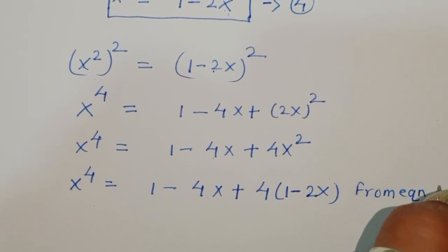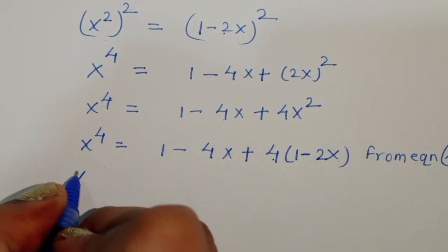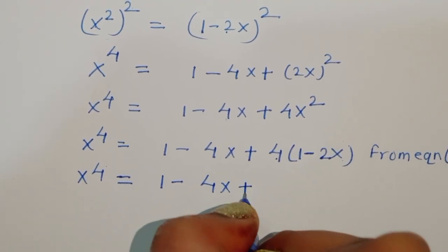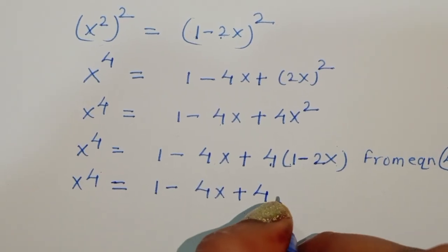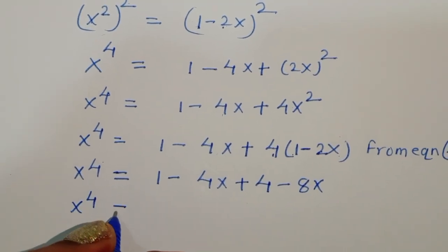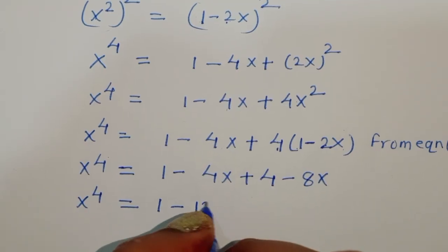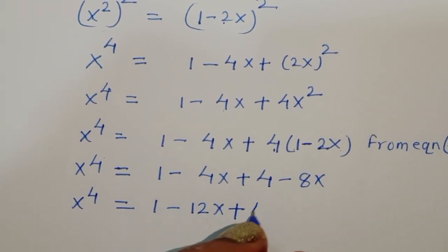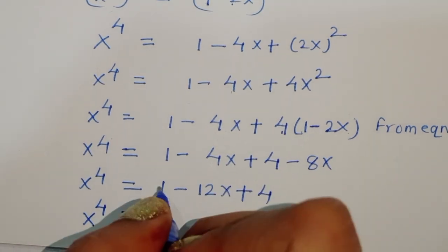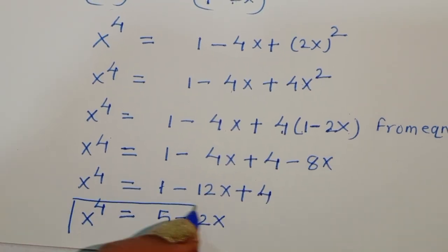So x power 4 equals 1 minus 4x plus 4 times (1 minus 2x), which gives 1 minus 4x plus 4 minus 8x. Therefore x power 4 equals 5 minus 12x. This is equation number 5.